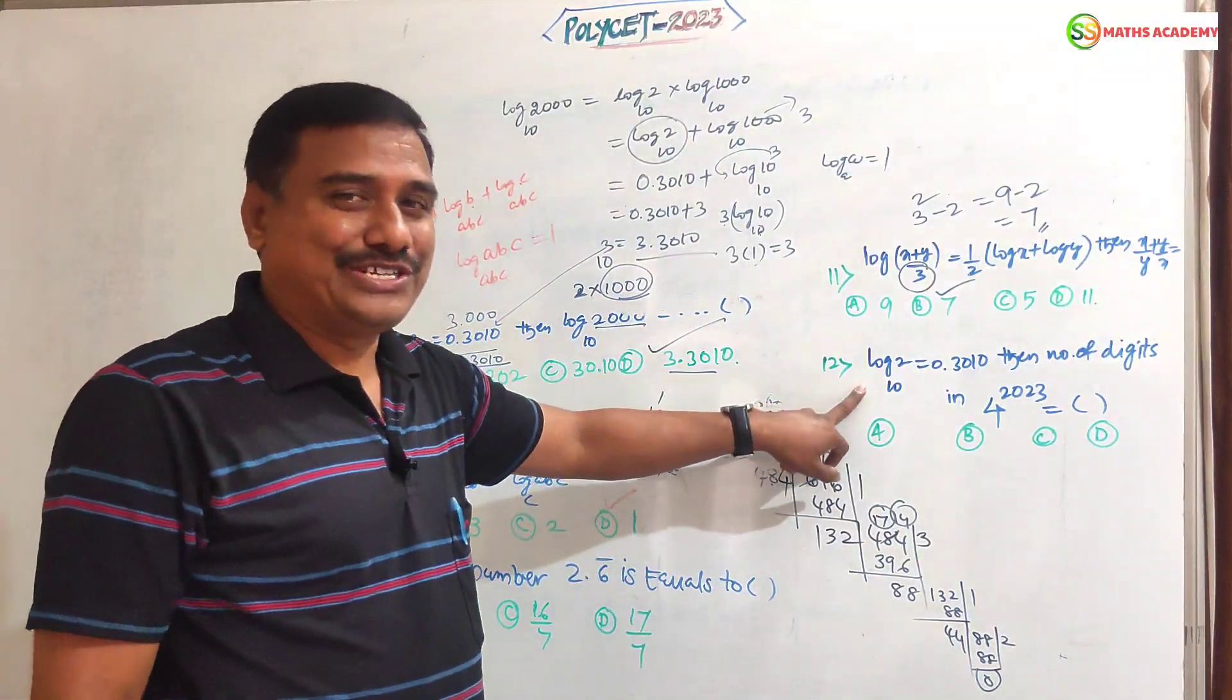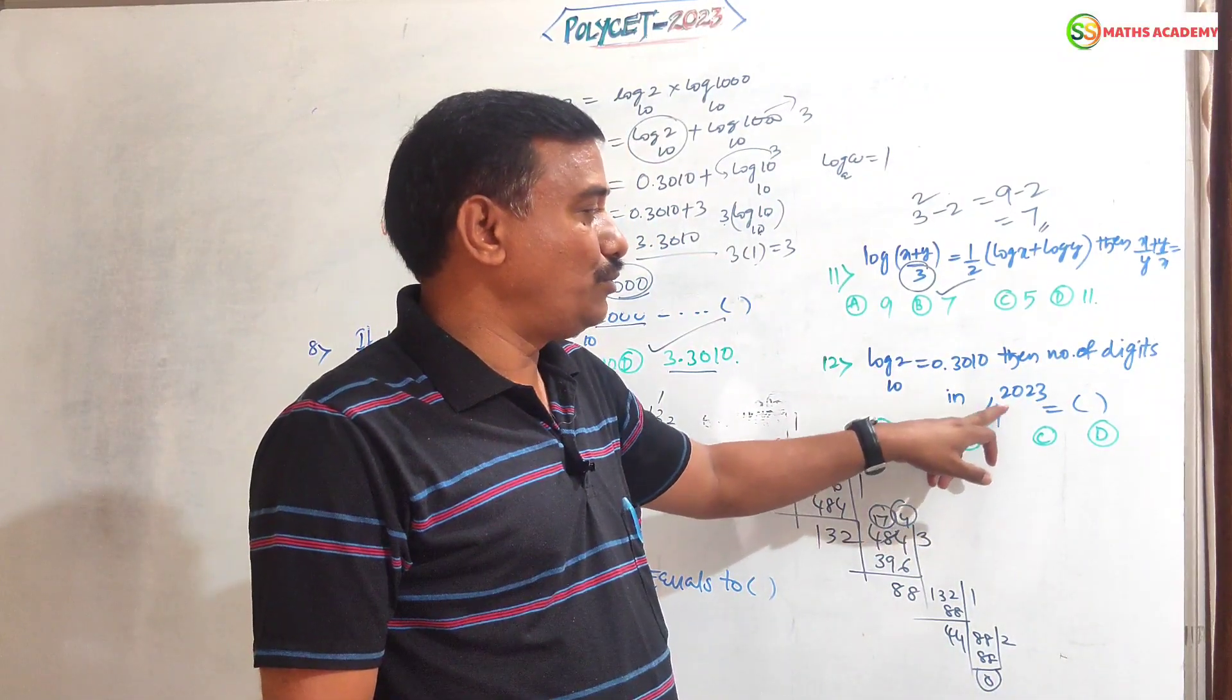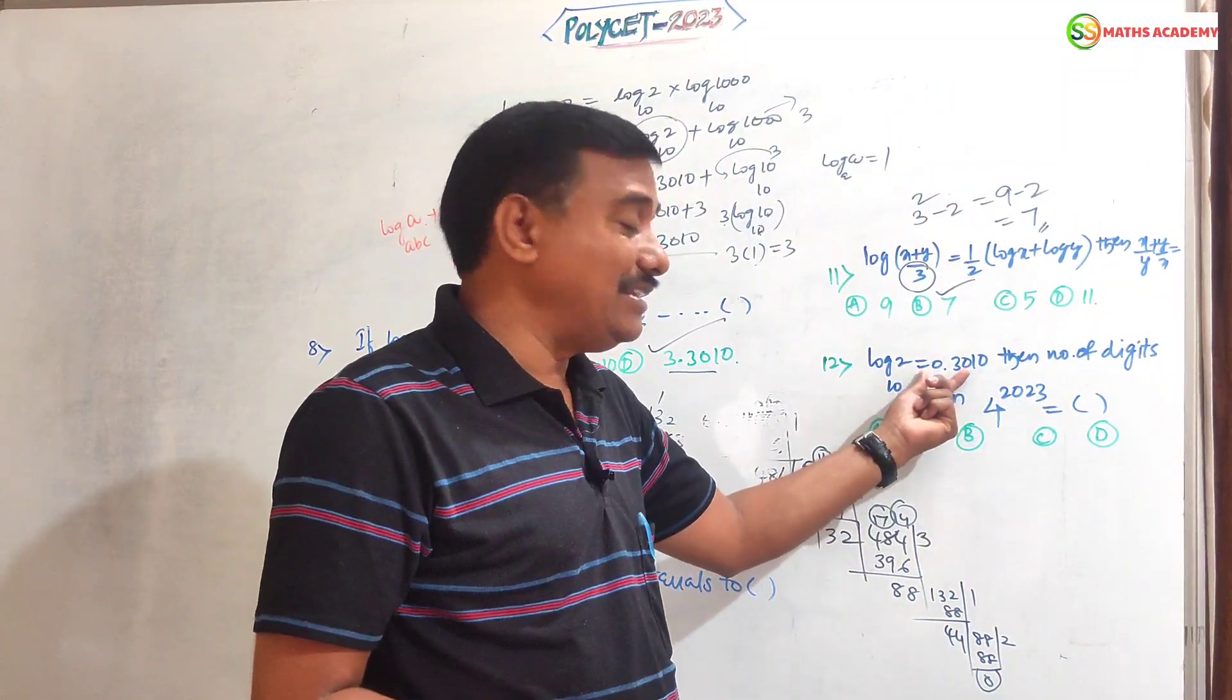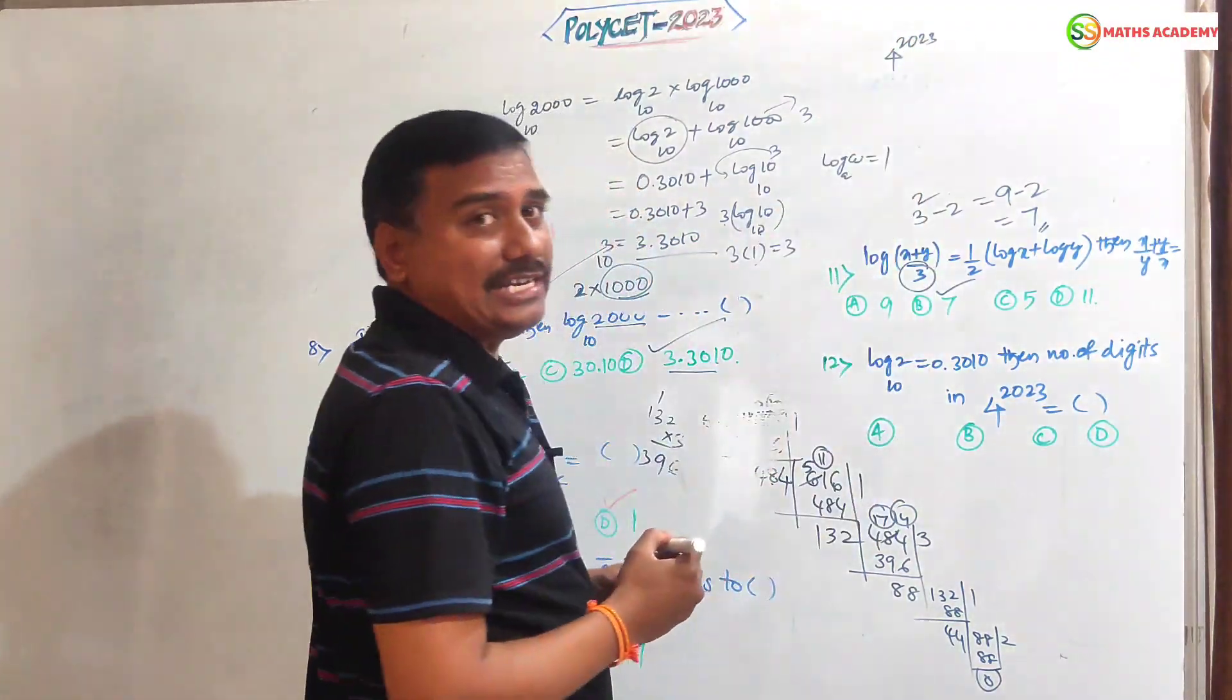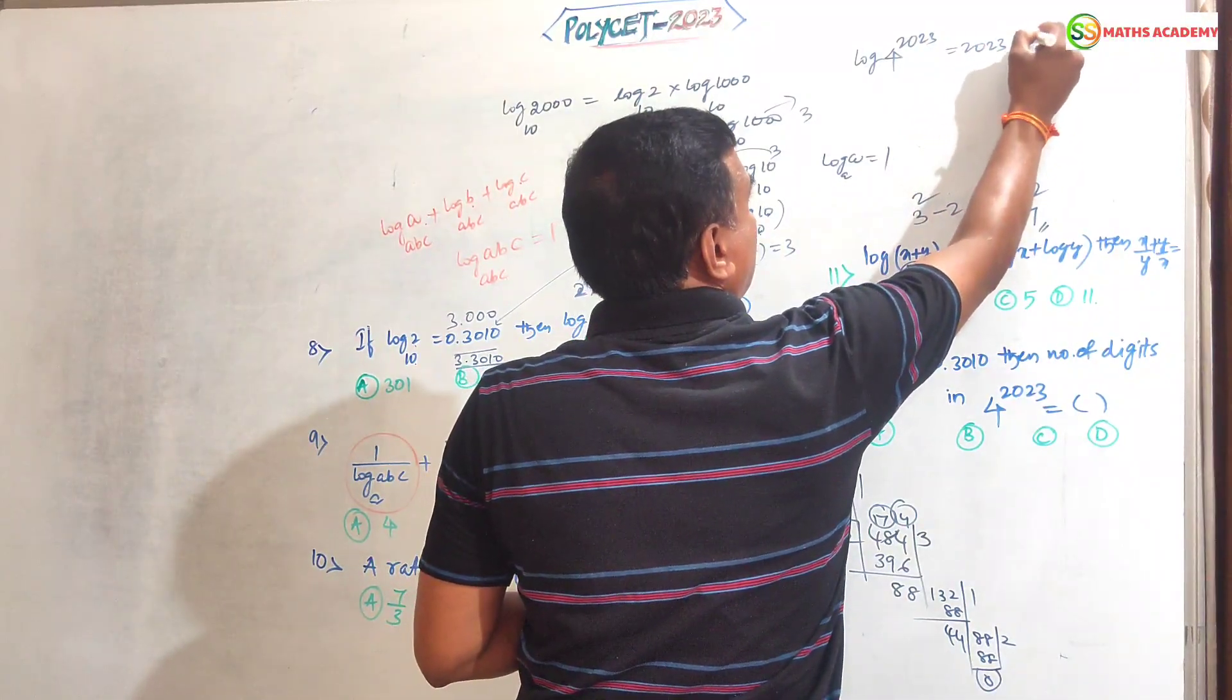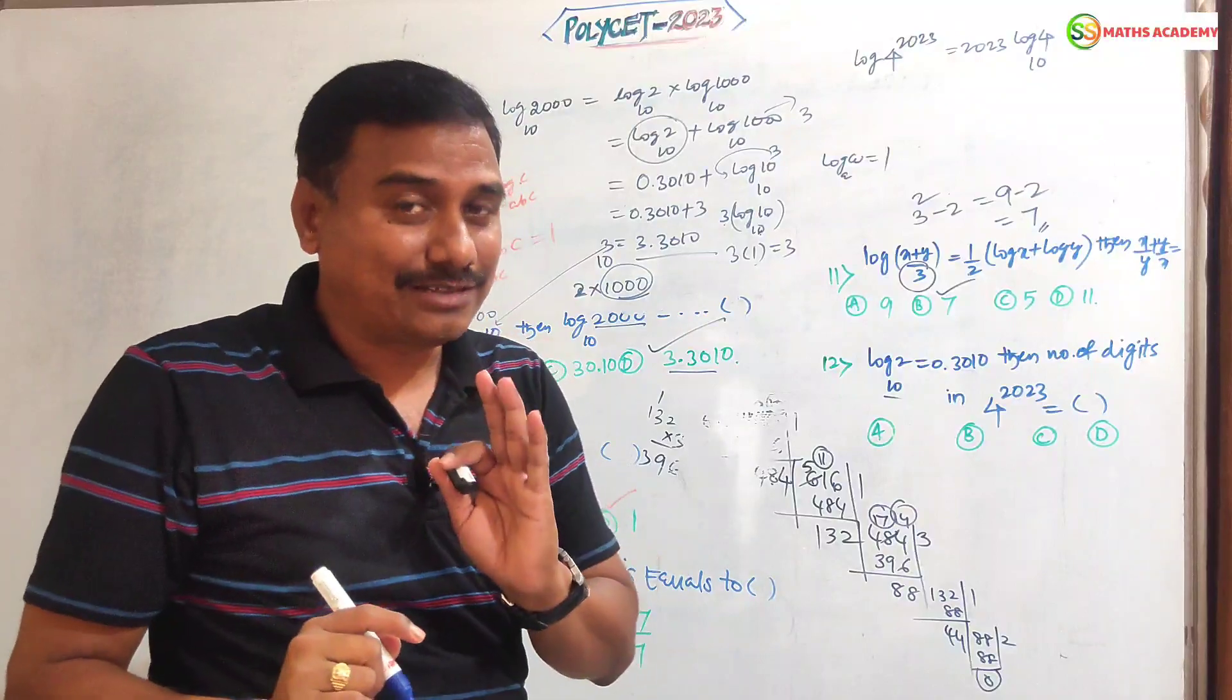Next, this is one more good question, interesting question. Log 2 to the base 10 is 0.30, then number of digits in 4 to the power of 2023. You see, among log 2 and log 4, it is double. Generally this term we have to take and implement this one in it. How is it? Yes, 4 to the power of 2023 you should write. Now apply the log. 2023 will come as a coefficient: 2023 into log 4 as per formula. Here base 10, you can take the base 10. When base 10 is there, common log. When base E is there, Napier logarithm. Logarithms are two types because logarithms are contributed in mathematics by John Napier. According to his name, when base is E, it is called Napier logarithm. When base is 10, then it is called common logarithms.